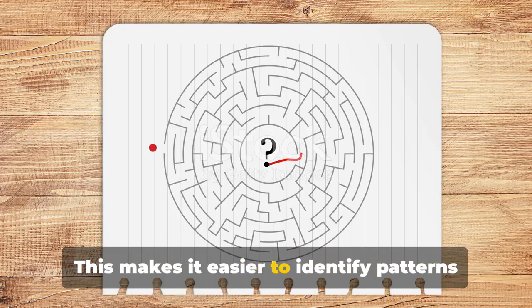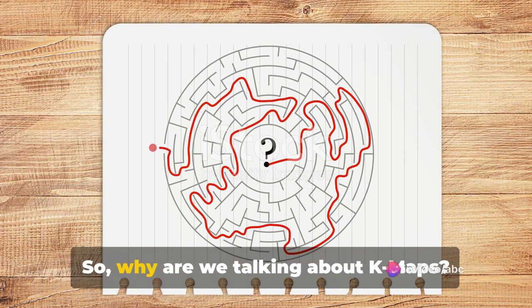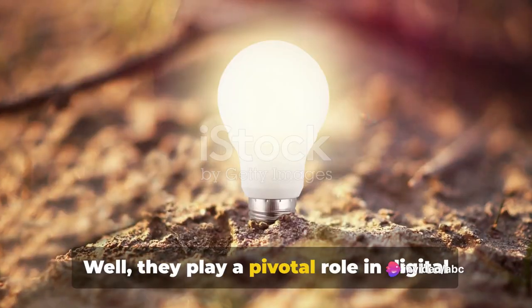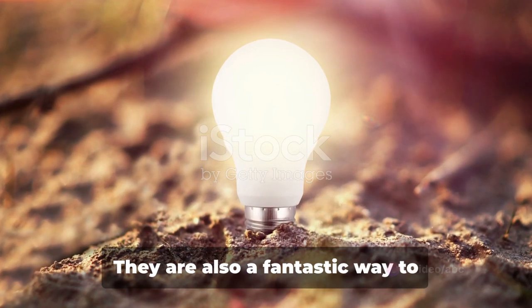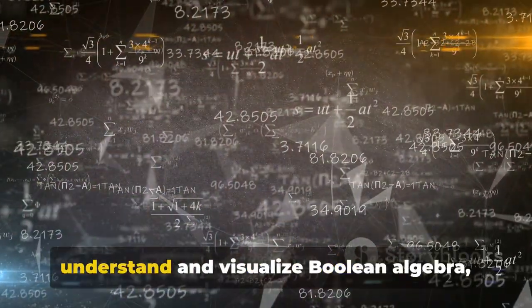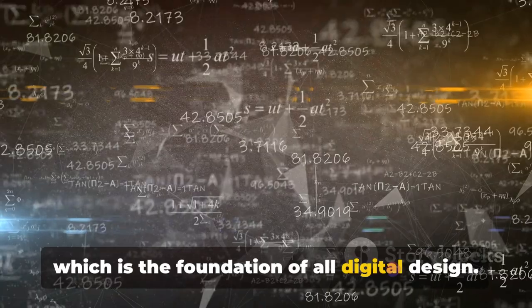This makes it easier to identify patterns and reduce the complexity of the function. So why are we talking about K-Maps? They play a pivotal role in digital design, helping to create more efficient circuits. They are also a fantastic way to understand and visualize Boolean algebra, which is the foundation of all digital design.